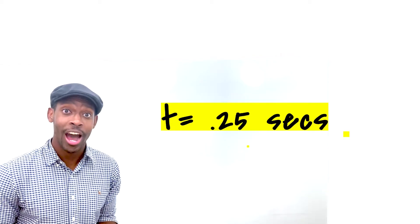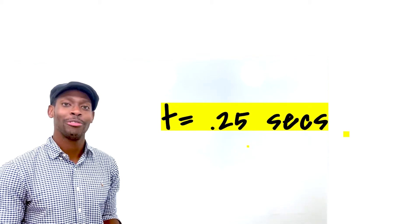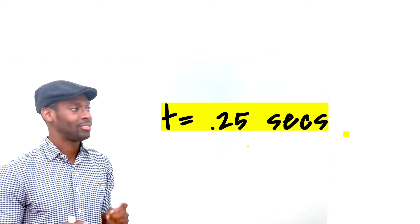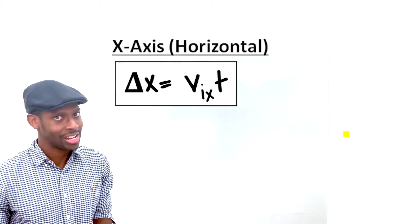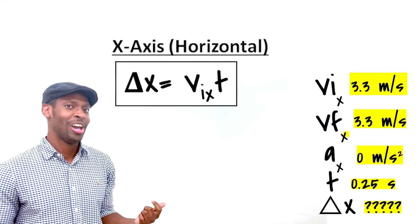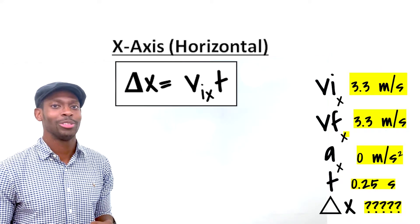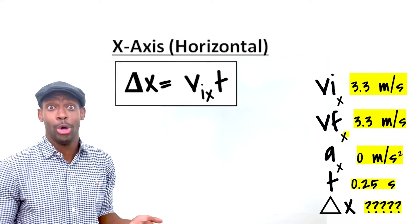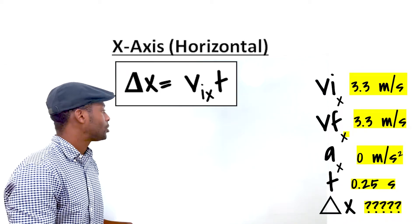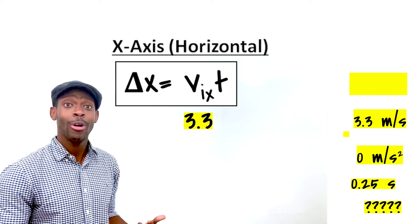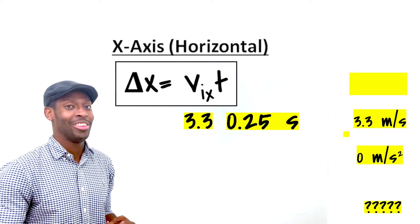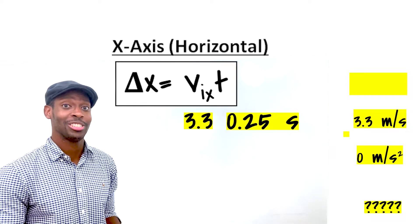Now that we know the time, we can plug it into my favorite kinematic equation for projectile. Delta x is equal to the initial velocity on the x-axis times time. Do we have the things that we need? Absolutely. Do we have to do any algebra? Nope. Let's do it. Delta x is equal to 3.3 times 0.25.